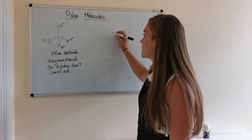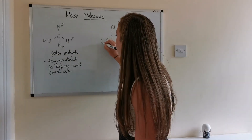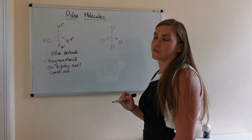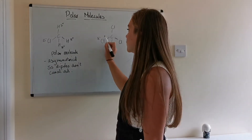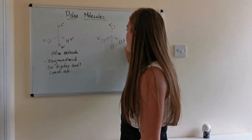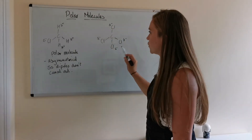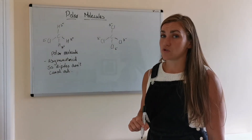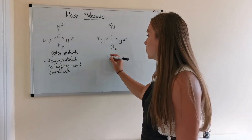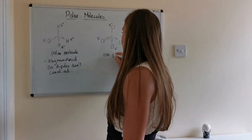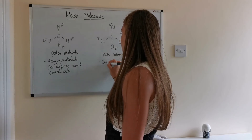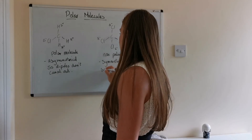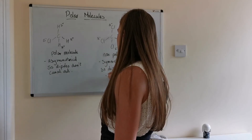If we take tetrachloromethane — four chlorines, because tetra means four — we've already said chlorine is more electronegative than carbon, so all the chlorines are going to end up delta minus. If you look around the outside: negative, negative, negative, negative — they're all the same. So they're all going to cancel out, and that's going to be a non-polar molecule with a symmetrical shape, so the dipoles cancel out.